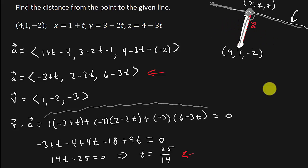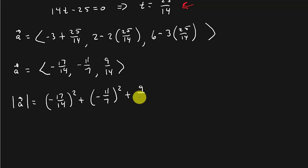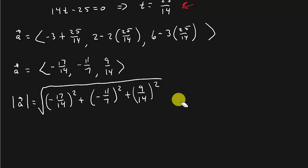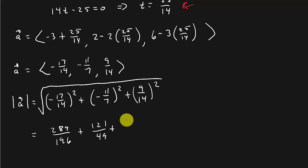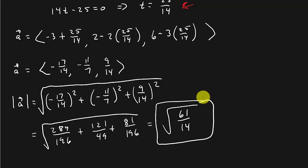All I need now is the magnitude of A: the square root of (-17/14)² + (-11/7)² + (9/14)², which is the square root of 289/196 + 121/49 + 81/196. That gives the square root of 61 over 14, and that is the distance between the point and the line.